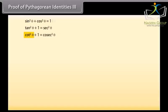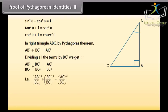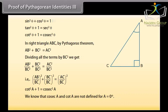Proof of Pythagorean Identity 3: The last identity is cot square theta plus 1 is equal to cosec square theta. To prove this, we again take a right triangle ABC. By Pythagoras theorem, AB square plus BC square is equal to AC square. Dividing all terms by BC square, we get AB upon BC whole square plus BC upon BC whole square equals AC upon BC whole square, that is, cot square A plus 1 is equal to cosec square A. We know that cosec A and cot A are not defined for A equal to 0 degrees, therefore it is true for all A such that 0 degree is less than A, which is less than or equal to 90 degrees.